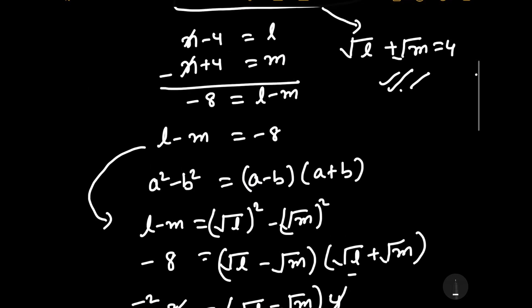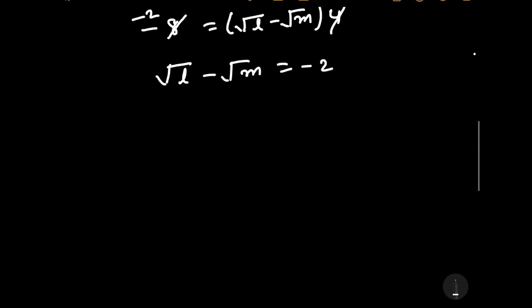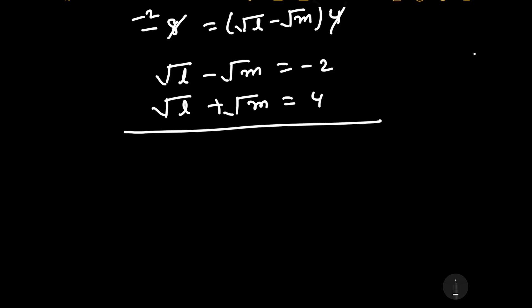From the question we have square root of l plus square root of m is equal to 4, and we found square root of l minus square root of m is equal to minus 2. Adding both equations, 2 times square root of l is equal to minus 2 plus 4, which equals 2. The 2 cancels, giving square root of l is equal to 1.